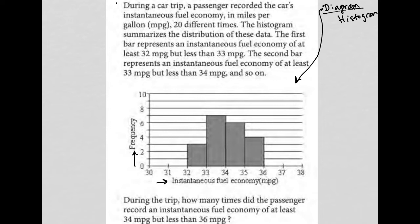The first bar represents an instantaneous fuel economy of at least 32 miles per gallon. So at least, meaning not less, but more, but less than 33.